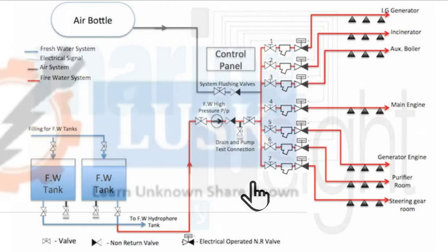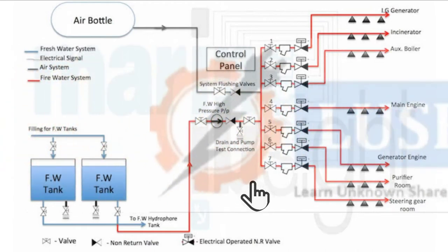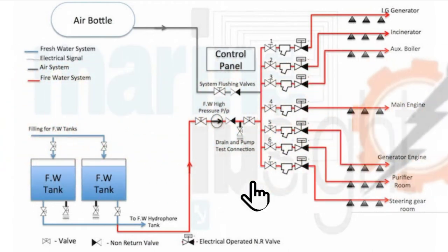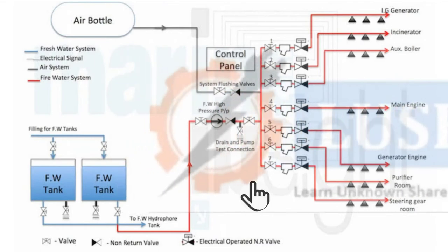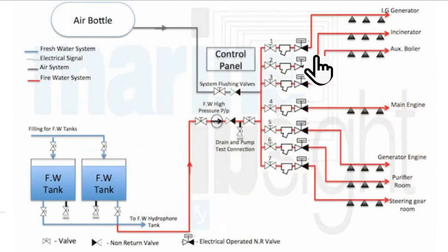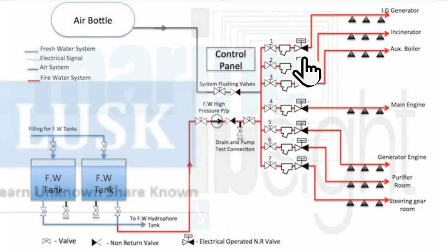As soon as both sensors are getting activated, the high pressure pump will get a signal and pump will start. Simultaneously, the electrically operated solenoid valve will open, and water will go from here to IGG system. That's it, simple.